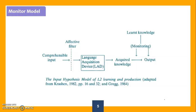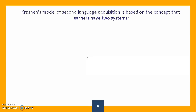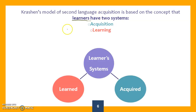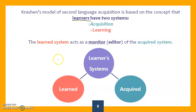This is the monitor model proposed by Krashen. I will refer to it again after explaining the five hypotheses. Krashen's model is based on the concept that learners of a second language have two systems in their brain: a learned system and an acquired system. The learned system acts as a monitor or editor of the acquired system, which is why it is called the monitor model.